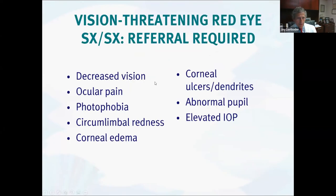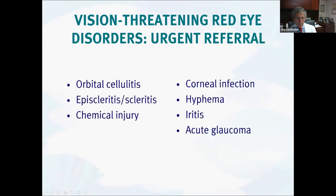Patients that should be sent to us with red eyes: decreased vision, pain, photophobia; if you see corneal ulcers or dendrites; if the pupil is abnormal; pressure is up; or if you're suspicious of any serious condition. Orbital cellulitis, scleritis, chemical injury, ulcer, and acute glaucoma all need to be seen right away.